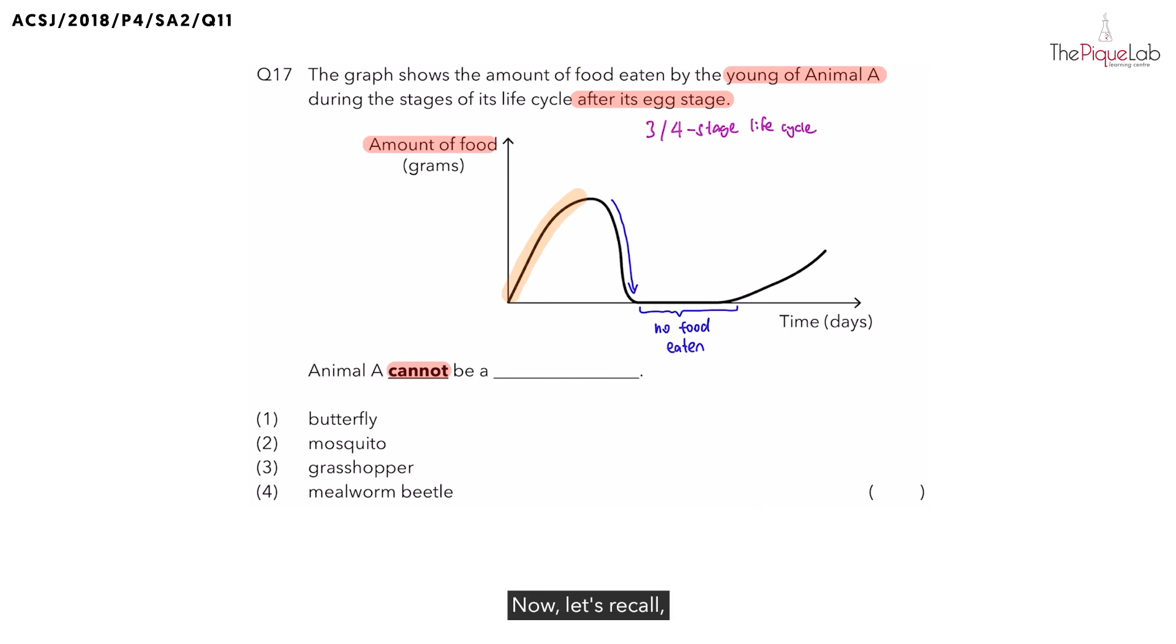Now, let's recall which are the stages of the life cycle that do not eat food at all. It is either the egg stage or it can also be the pupa stage. Now, can this be the egg stage? No. Remember, this graph shows us the stages of the life cycle after the egg stage. So if this cannot be the egg stage, that means at this point, what stage would animal A be in? It would be the pupa stage.